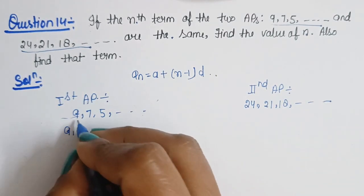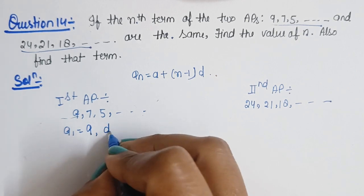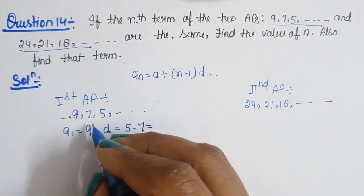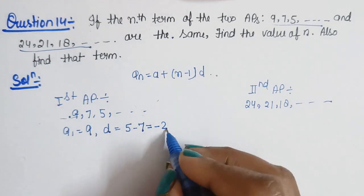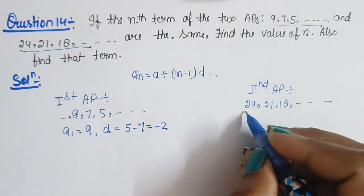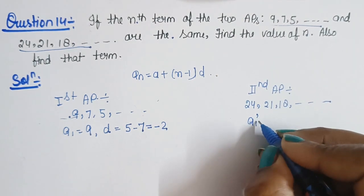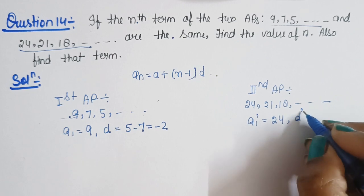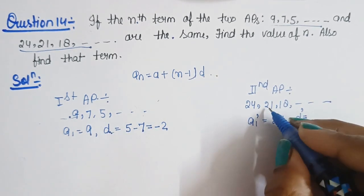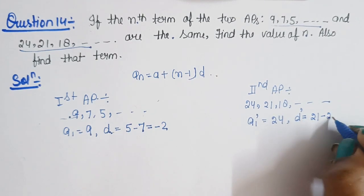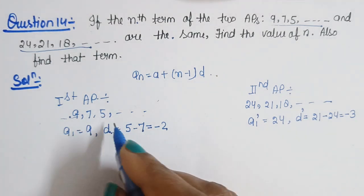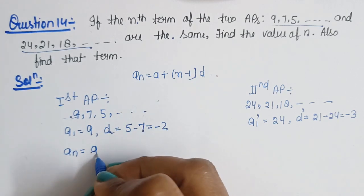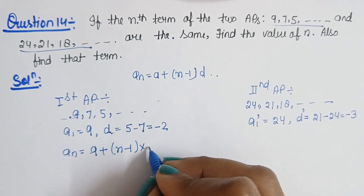For the first AP: a₁ = 9, and the common difference d₁ = 5 − 7 = −2. For the second AP: a₁ = 24, and the common difference d₂ = 21 − 24 = −3. The nth term formula for the first AP is: 9 + (n − 1) × (−2).